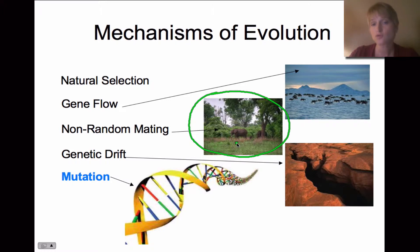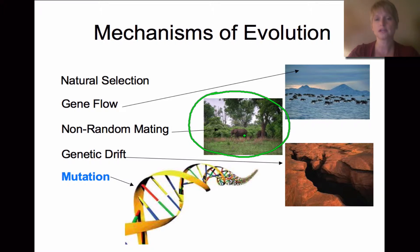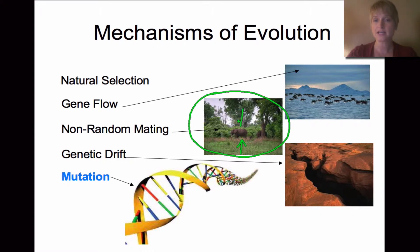Another mechanism is non-random mating. In a stable population, mating is essentially random with a large selection of mates. In non-random mating, there may be only one male left in the population, so the females only have that male to choose from. That male's genetics are what get passed along, reducing variation and changing the genetics of the population.